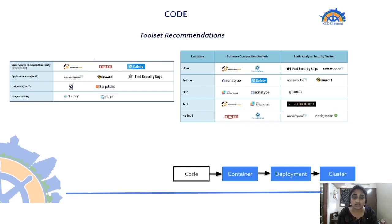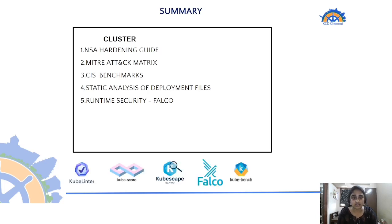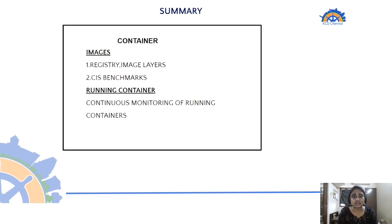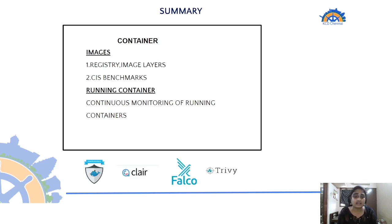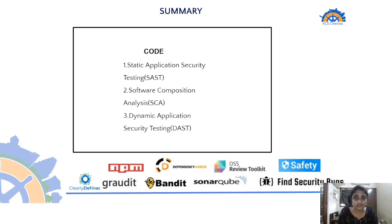Multi-layer hardening covers the cluster layer, cloud layer, code layer, and container layer. For software composition analysis in Python, you use tools like Safety; for code security analysis in Python, you use tools like SonarQube and Bandit. To summarize: for the cluster layer we follow NSA hardening guidelines, the MITRE framework, CIS benchmarks, static analysis of deployment files, and runtime security using Falco. For container and image security, we scan image layers and registries, sign images, check CIS benchmark adherence, and do continuous monitoring.